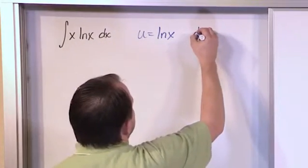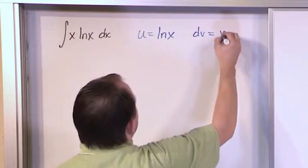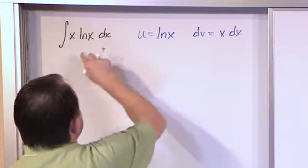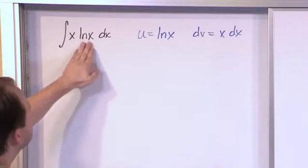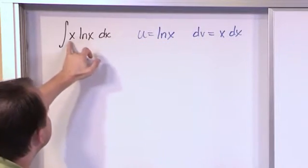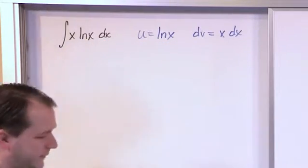And then you generally need to choose the rest of the function to be whatever is left over. So if the natural logarithm is tied up with u, the only thing left is x and dx, and so that has to be tied up in dv.